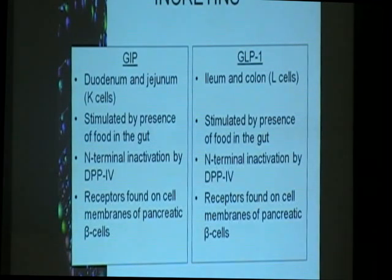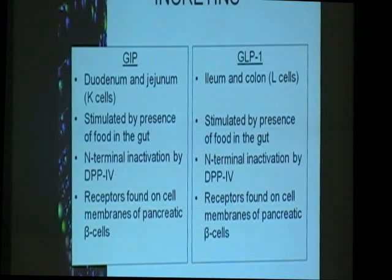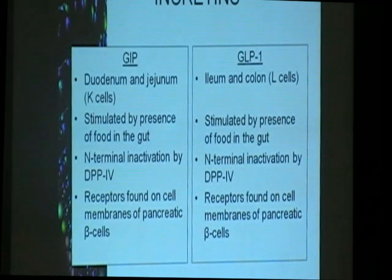These studies have been ongoing surprisingly since the 1960s — that's the length of time before we developed a good drug. We already knew about this by the 1970s, but we had to wait more than 30 years to be able to produce a safe and effective drug.